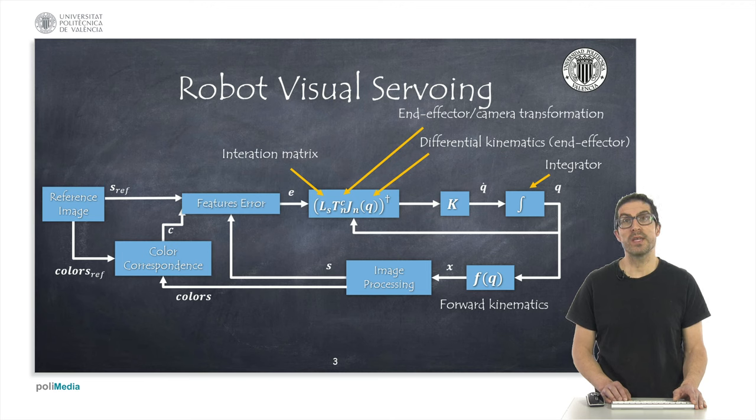This error is defined in the image plane and, for this reason, we use differential kinematics, as well as the transformation between the end effector and the camera and the interaction matrix. So,